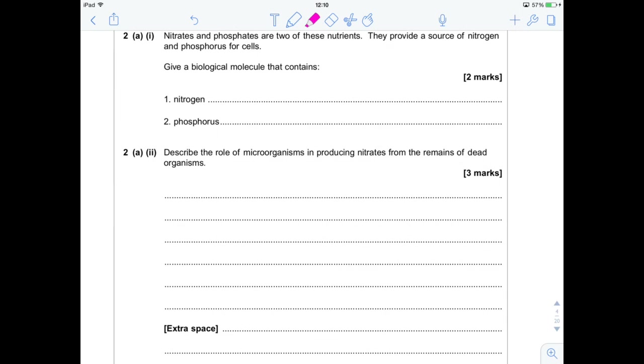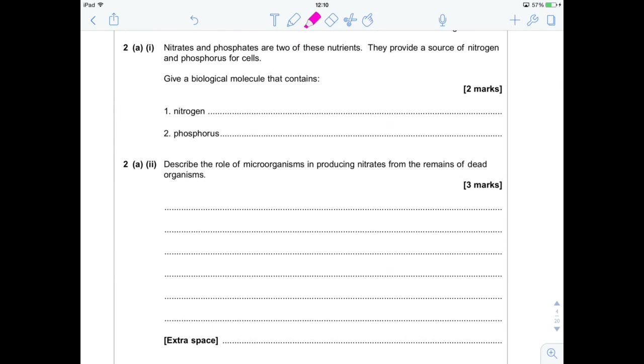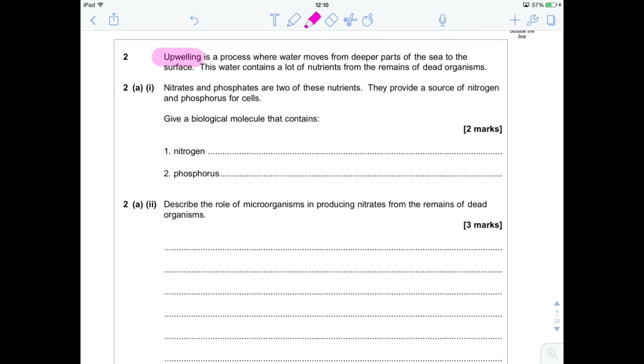Here's a nice question on the nitrogen cycle. We say nitrates and phosphates are two nutrients that are brought up by this process called upwelling. Something in the question about remains of dead organisms, which should instantly trigger decay questions, decay answers in your head.